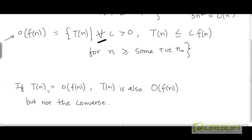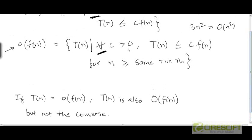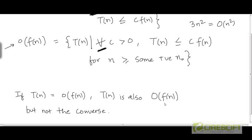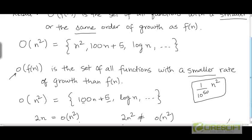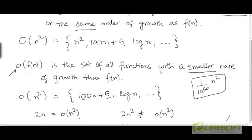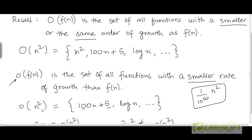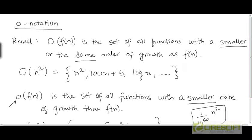It is easy to see that if a function t belongs to the set little-o, it must also belong to the set big-O. If for all constants c, t is going to be upper bounded by c times f, then clearly there exists a constant c for which t is upper bounded by c times f. So any function that is in little-o is also going to be in big-O. Alternatively, if a function has a smaller rate of growth than f, it obviously has a smaller or the same rate of growth as f, so it belongs to big-O as well.